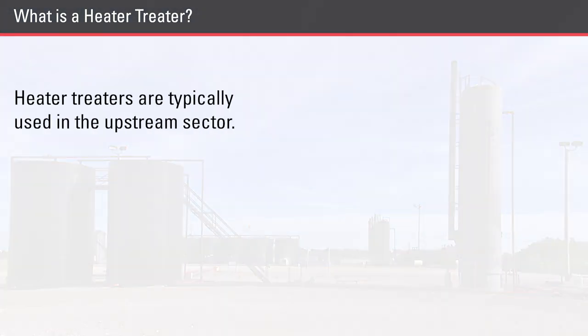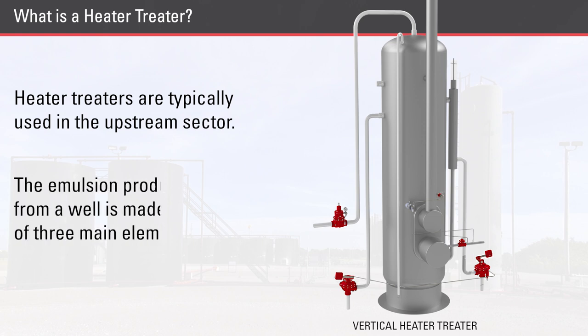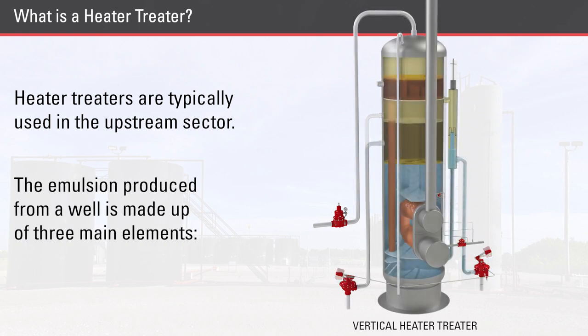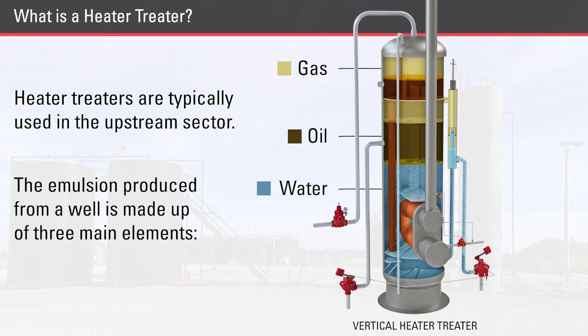The use of heater treaters to separate crude oil is typically found in the upstream sector. The emulsion produced from a well is made up of three main elements: oil, gas, and water.